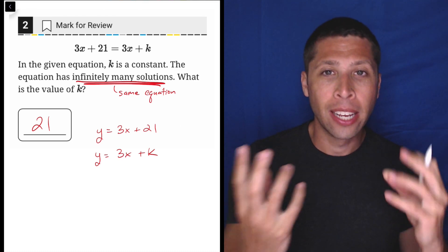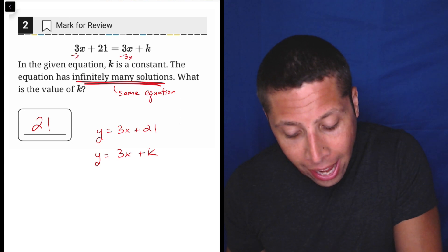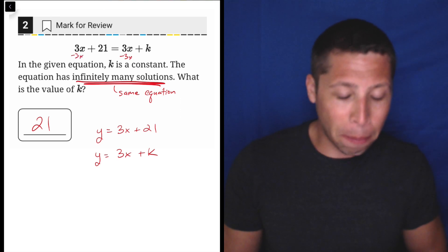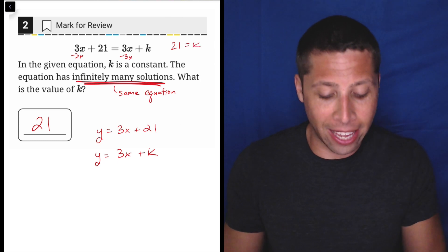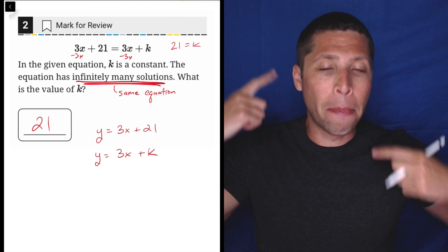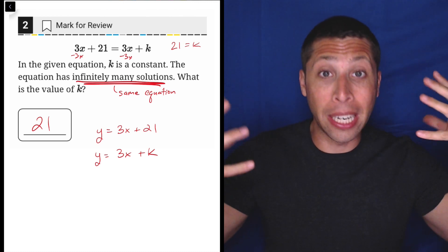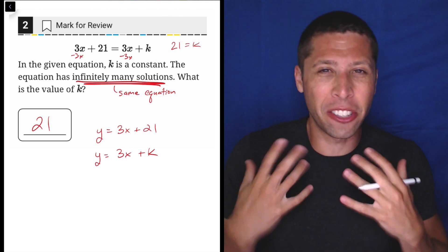I think just when we see the one equation, there's a temptation to subtract 3X from both sides. And you can do that, but then you're like, what does that even mean? 21 equals K. Yeah, that's the answer. But I think it starts to make your brain sputter a little bit because it's just weird.